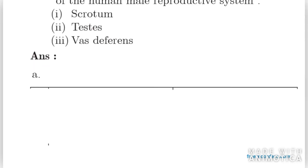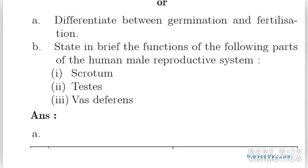In B part, state the functions of scrotum, testes, and vas deferens. Scrotum contains and supports the testes in the male human body — it is situated outside the body cavity and allows sperm to develop at the optimum temperature. Testes: the formation of male germ cells or sperms takes place in the testes. Vas deferens: it ascends into the abdomen, passes over the urinary bladder, and receives ducts from the seminal vesicles behind the urinary bladder to form the ejaculatory duct.